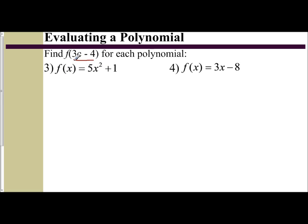This just means take this expression, f of 3c minus 4. This 3c minus 4 is what you plug in for x, the whole expression. So if I want to find f of 3c minus 4, given f of x equals 5x squared plus 1, I am going to replace the x with this expression of 3c minus 4.